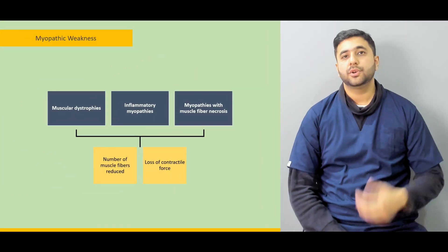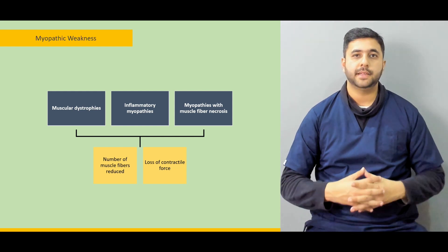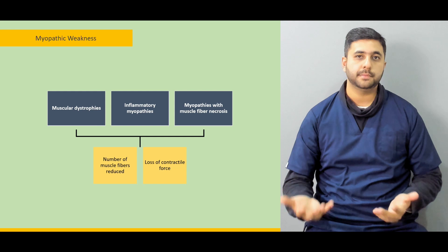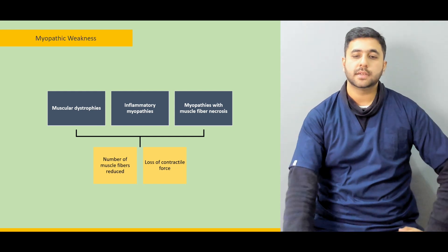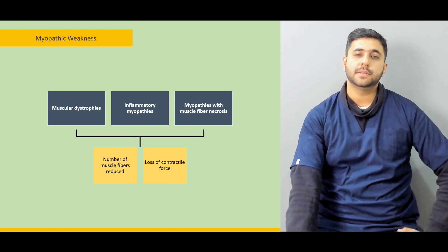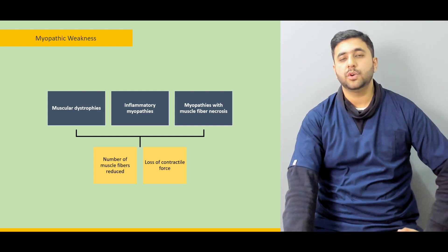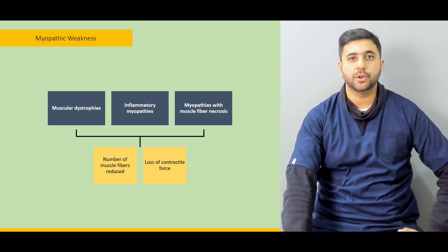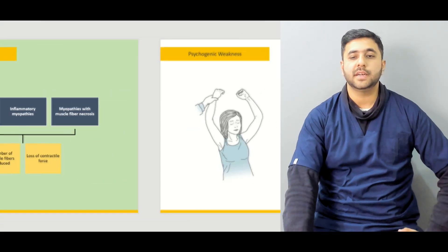Then we are going to talk about the various myopathies — what do these myopathies mean, what are the various types, whether it is a muscular dystrophy, an inflammatory lesion, or certain myopathies with muscle fiber necrosis. How do they present and how do we differentiate them from an upper motor neuron, lower motor neuron, or neuromuscular junction weakness problem?